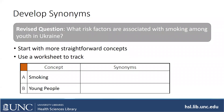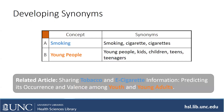Start with more straightforward concepts and use a worksheet to track. For smoking and young people, you might start with: smoking, cigarettes — and for young people: kids, children, teens, teenagers. When you do a sample search with those terms, one article that comes up is called 'Sharing tobacco and e-cigarette information: predicting its occurrence and valence among youth and young adults' — and right away you see missed keywords. You could add tobacco and e-cigarettes as concepts. Under young people, this article had the words 'youth' and 'young adults,' so you add those to your synonyms as well. That's how we build out our synonym list — look at good articles and then add to the list.